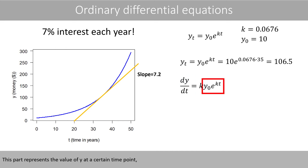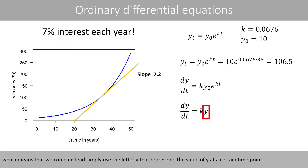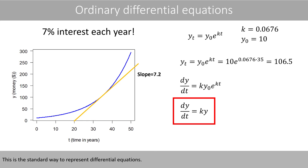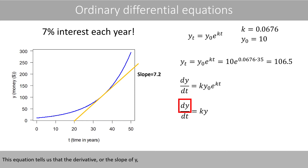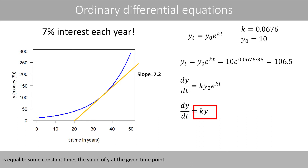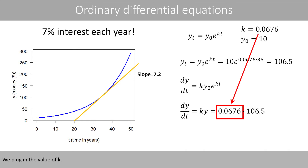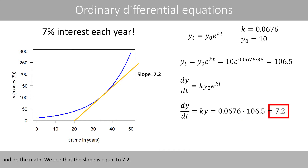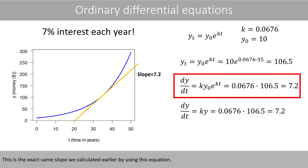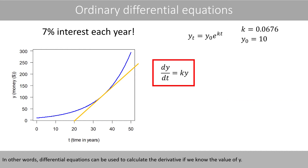This part represents the value of y at a certain time point, which means we could simply use the letter y to represent the value of y at a certain time point. This is the standard way to represent differential equations. This equation tells us the derivative — the slope of y — when we make a small change in t, for example moving 0.1 seconds forward in time. It is equal to some constant times the value of y at the given time point. We plug in the value of k and the value of y when t equals 35, do the math, and see that the slope is equal to 7.2 — exactly the same slope we calculated earlier. In other words, differential equations can be used to calculate the derivative if we know the value of y.